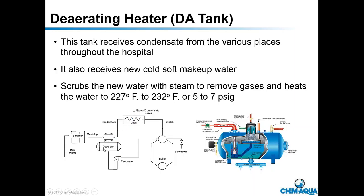When condensate doesn't come back — such as from the sterilizers in central sterile, where condensate is dumped — that's a considerable amount of steam that's lost and doesn't return. That's where the soft water makes up to the deaerator, which then pumps it to the boiler. The boiler makes steam that goes to the different processes in the hospital: sterilizers, domestic hot water, building heat, the kitchen, or the laundry if they have one.